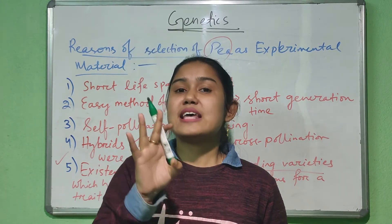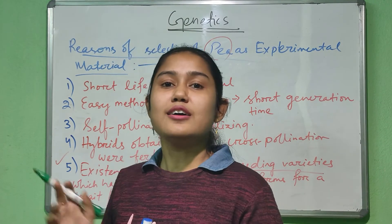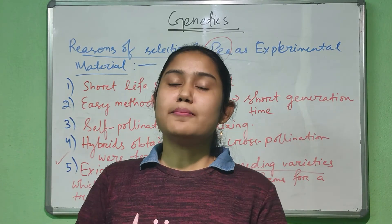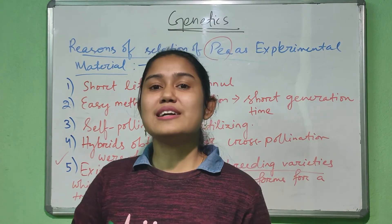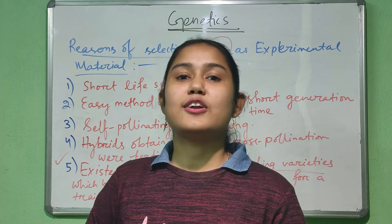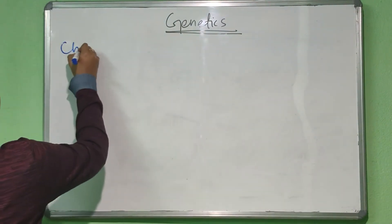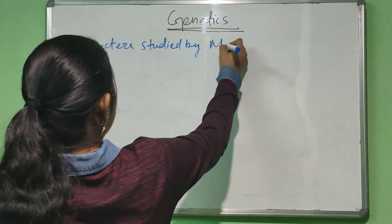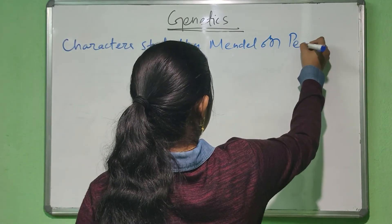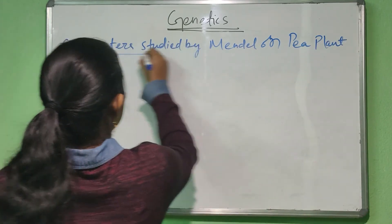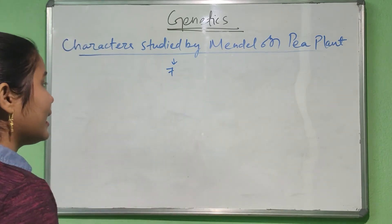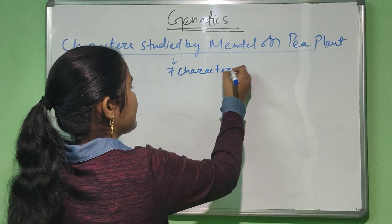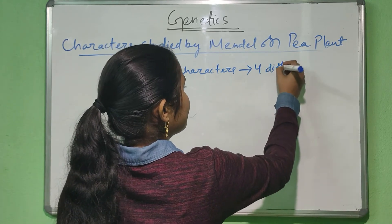Mendel chose seven different characters to study classical genetics. By studying those seven different characters he postulated his principles and laws. Let's study those seven different contrasting characters studied by Mendel on pea plant. There were seven characters, and these seven characters were present in four different chromosomes.